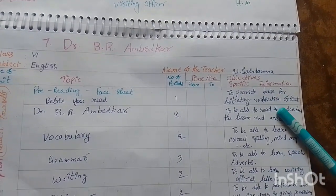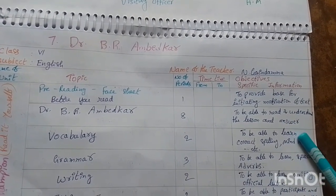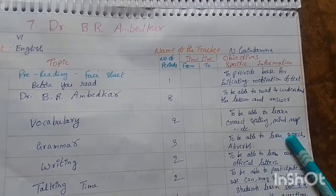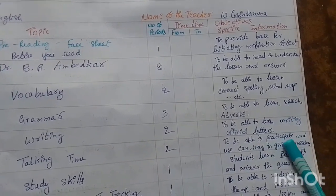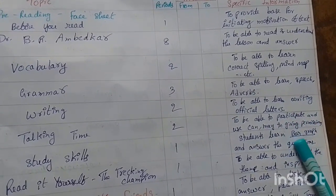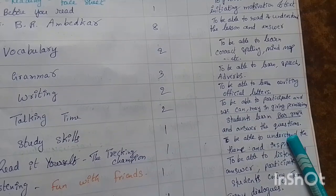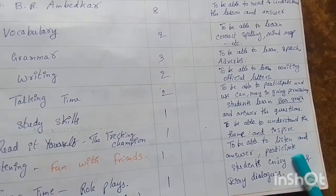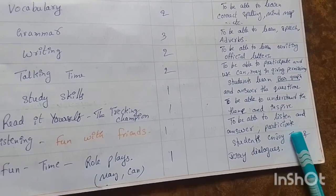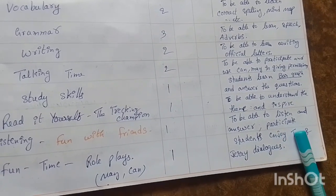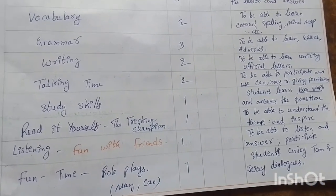Objectives include: providing ways for initiating motivation towards the text; to be able to read and understand the lesson and answer; to learn correct spelling, mind map, etc.; to learn direct speech and adverbs; to learn writing official letters; to participate and use 'can' and 'may' in giving permissions; students learn bar graph and answer questions; students understand the theme and get inspired; to listen, answer, and participate in role plays and fun times; and students enjoy Tom and Jerry dialogues and fun time.